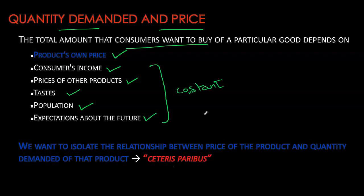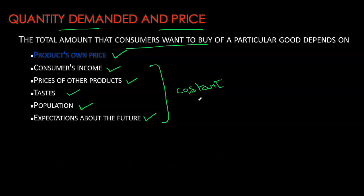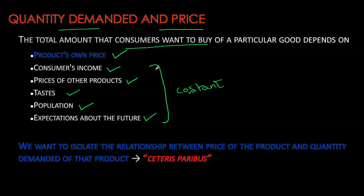So we want to isolate the relationship between quantity demanded and the price of the product, holding everything else constant. This assumption is referred to as the ceteris paribus condition.